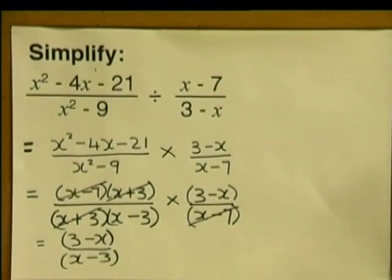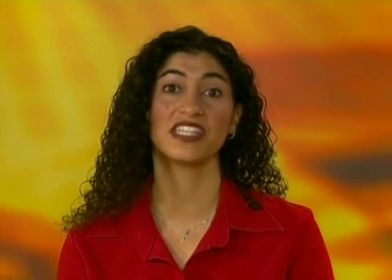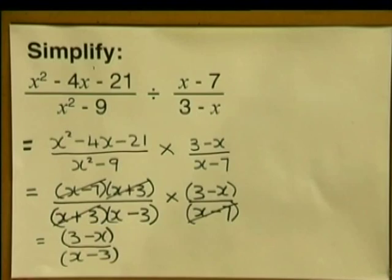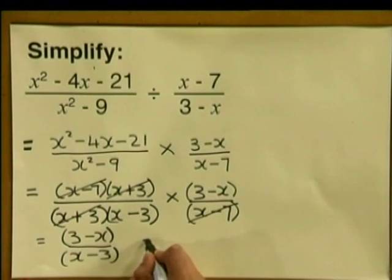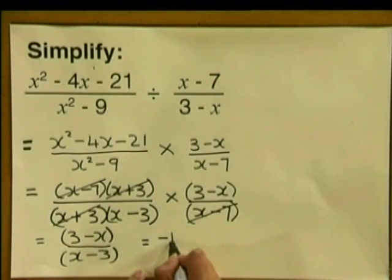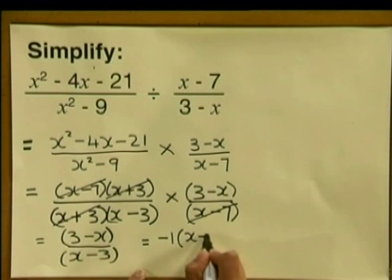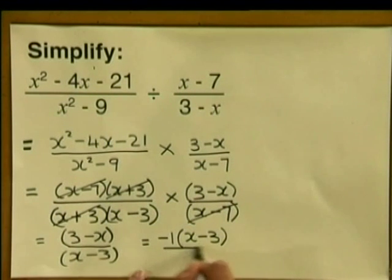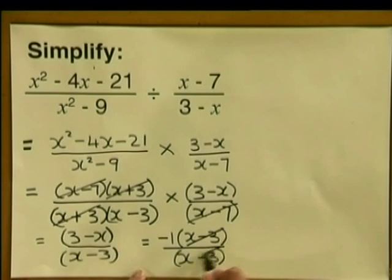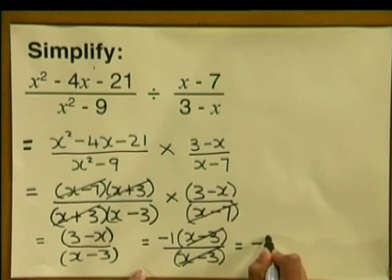These do not cancel out because 3 minus X is not the same as X minus 3. What can we do? We know we can change the sign by taking out minus 1 from the bracket in the numerator — this means we are multiplying by minus 1. So we write minus 1 multiplied by X minus 3, all divided by X minus 3. Now we have common factors which cancel out, and we are left with minus 1.